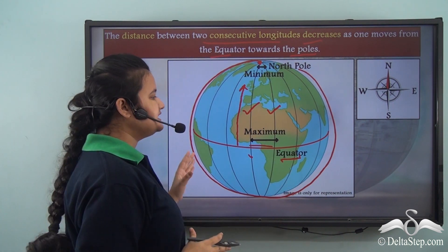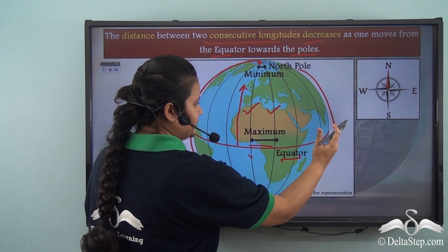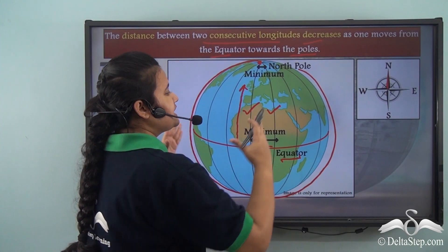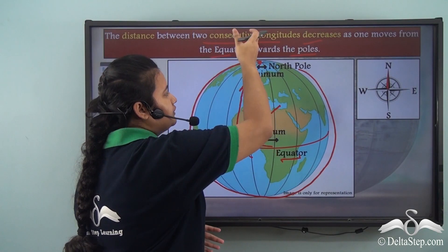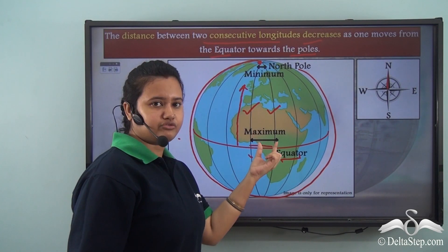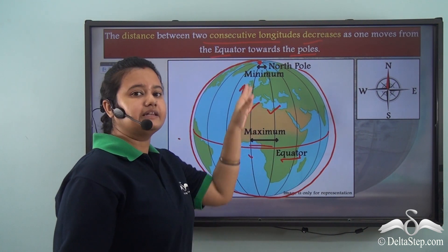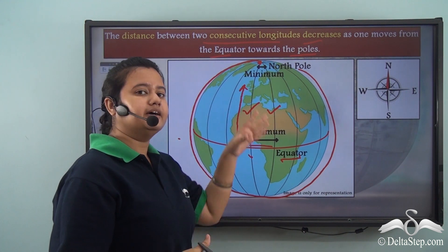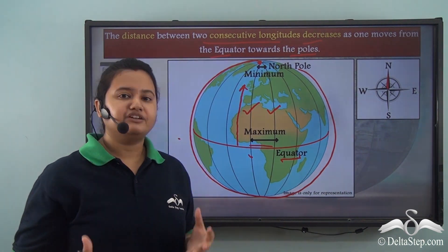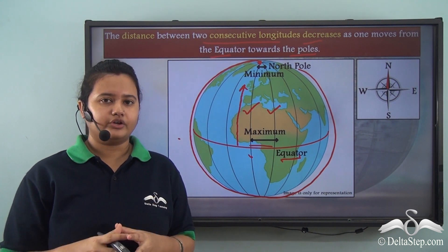Since the earth is a sphere, it is bulging at the equator while it is flattened at the poles. Because the earth is bulging at the equator, if we draw vertical lines on the globe, the distance between two consecutive longitudes will be maximum or greatest at the equator while the distance will be minimum at the poles. This is the reason why the distance between two longitudes differs.